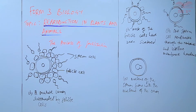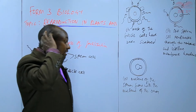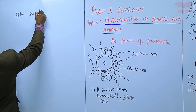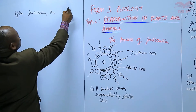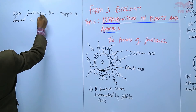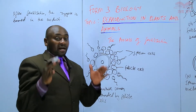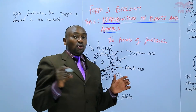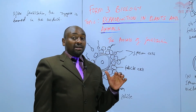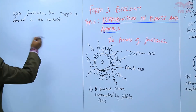What follows after fertilization? We form the zygote, and that zygote is formed within the oviduct. After fertilization, the zygote is formed in the oviduct. This zygote then moves towards the uterus by the contraction and relaxation of the smooth muscles of the oviduct. Also, the oviduct is lined with cilia — hair-like structures — that help to propel the zygote towards the uterus.